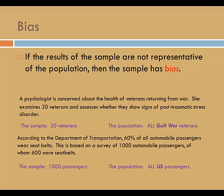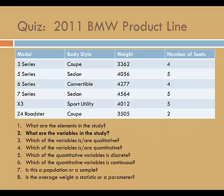We have a good foundation vocabulary for statistics, so let's have a little quiz. Take a look at this small spreadsheet with data about the 2011 BMW product line. What are the elements in the study? Elements are specific entities about which information is collected — in this case, BMW models. What are the variables in the study? Variables are the characteristics of interest, which include body style, weight, and number of seats.